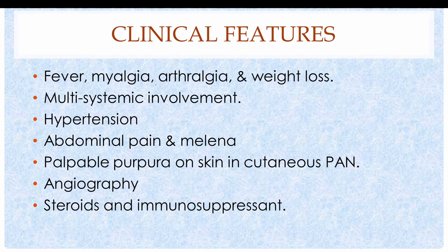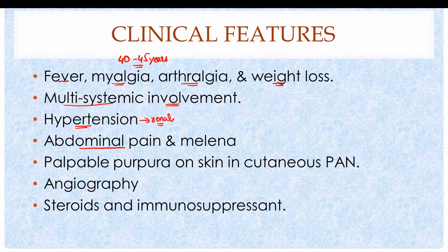Polyarteritis nodosa can occur at all ages but most commonly affects those aged 40 to 45 years. It presents with vague symptoms including fever, myalgia (muscle pain), arthralgia (joint pain), and weight loss. The disease is characterized by multisystemic involvement: renal artery involvement causes hypertension, intestinal artery involvement causes abdominal pain and melena, and cutaneous Polyarteritis nodosa may present with palpable purpura or rash.